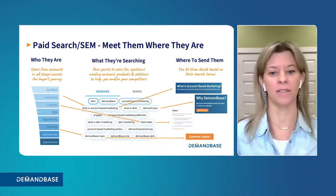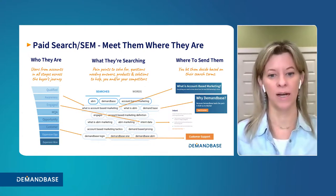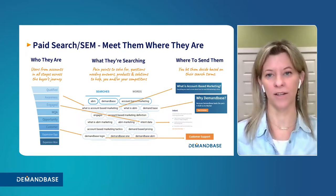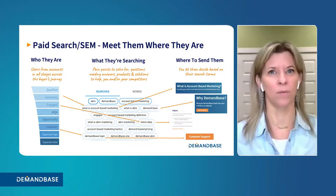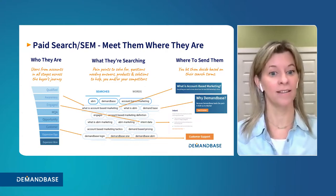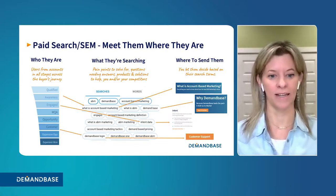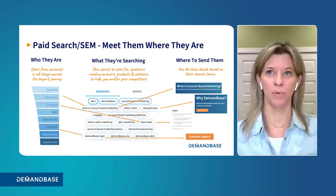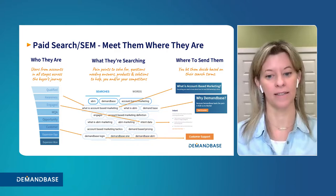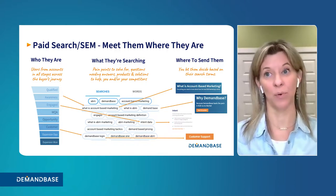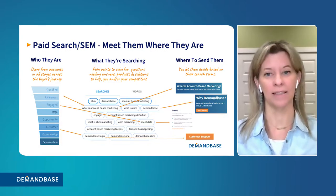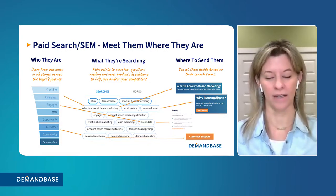If they're not yet aware or engaged, they may not know the industry labels and terms used. Then you go further down the funnel — if someone is searching 'what's the difference between ABX and ABM,' it's pretty clear where they are. By choosing the right keywords and phrases and pointing them to exactly the right content, you're staying true to the integrity of the account-based approach within paid search.